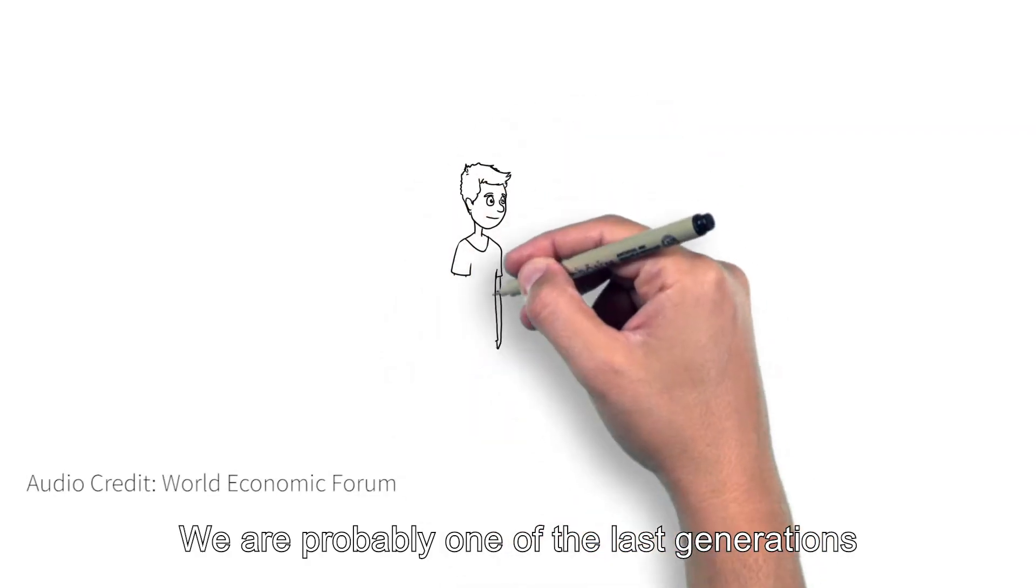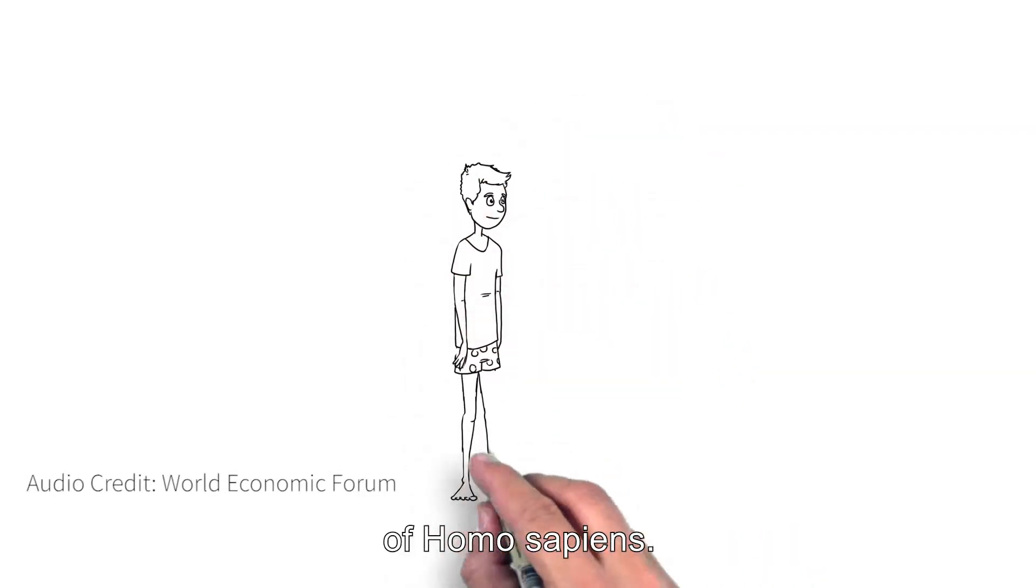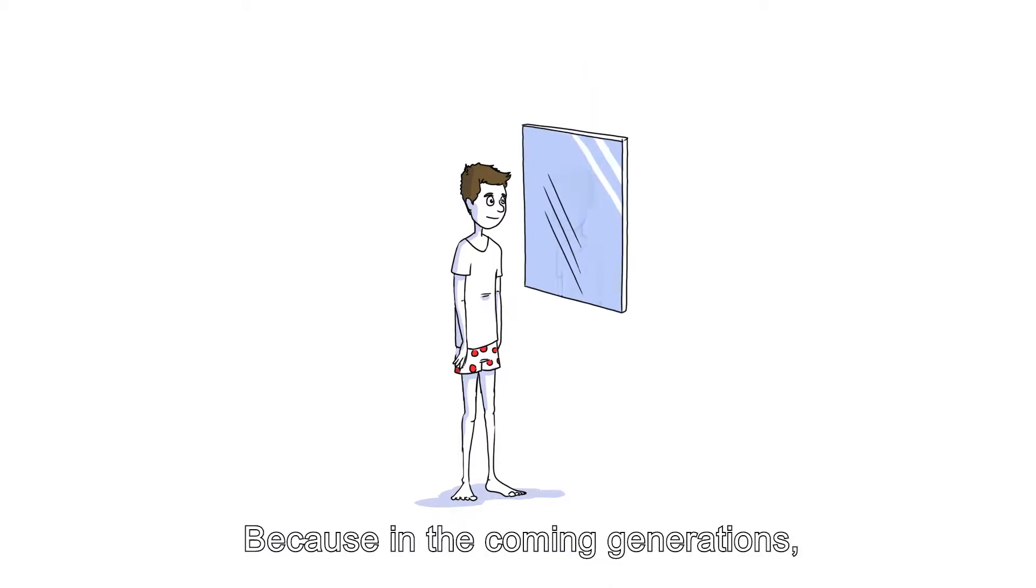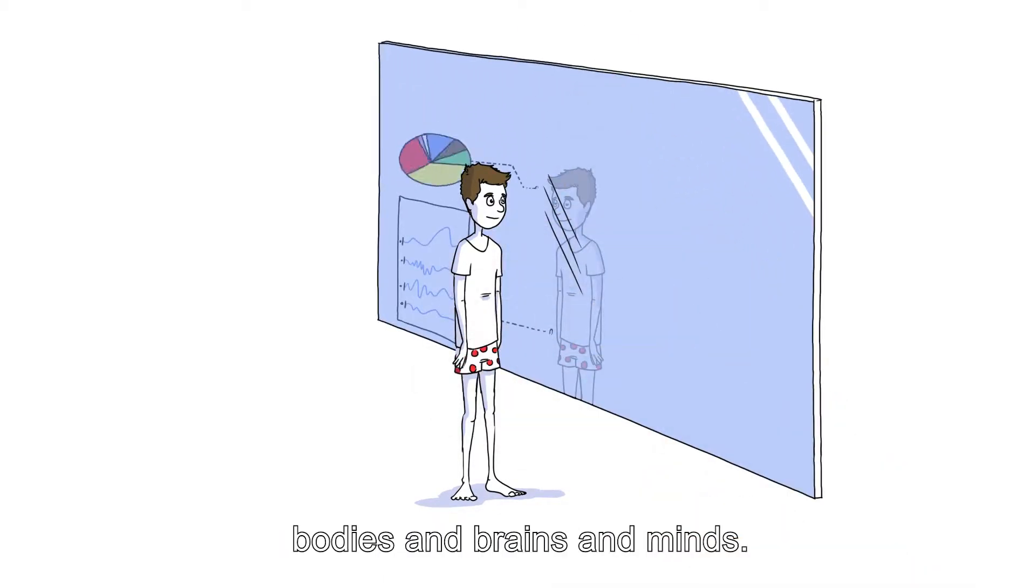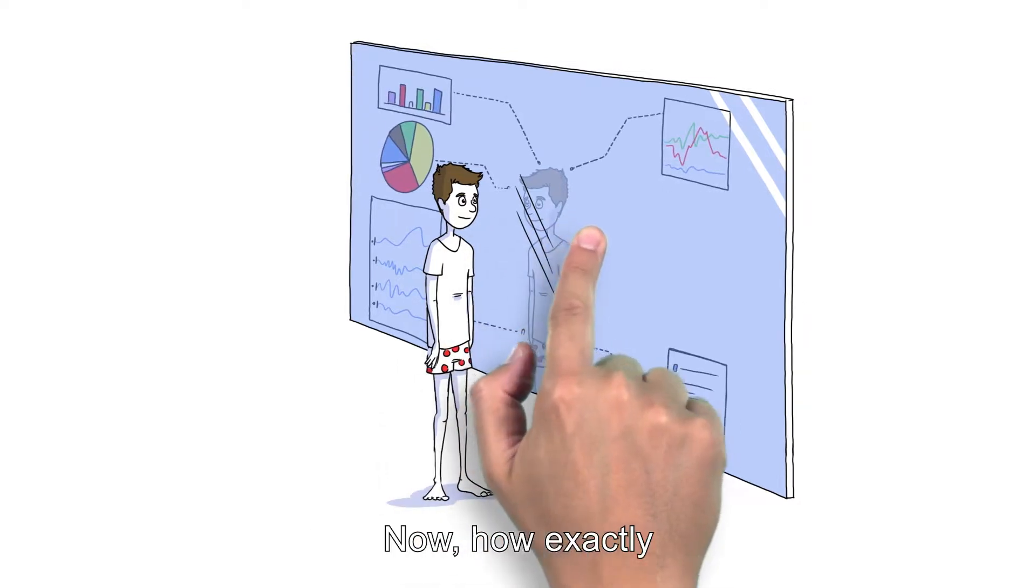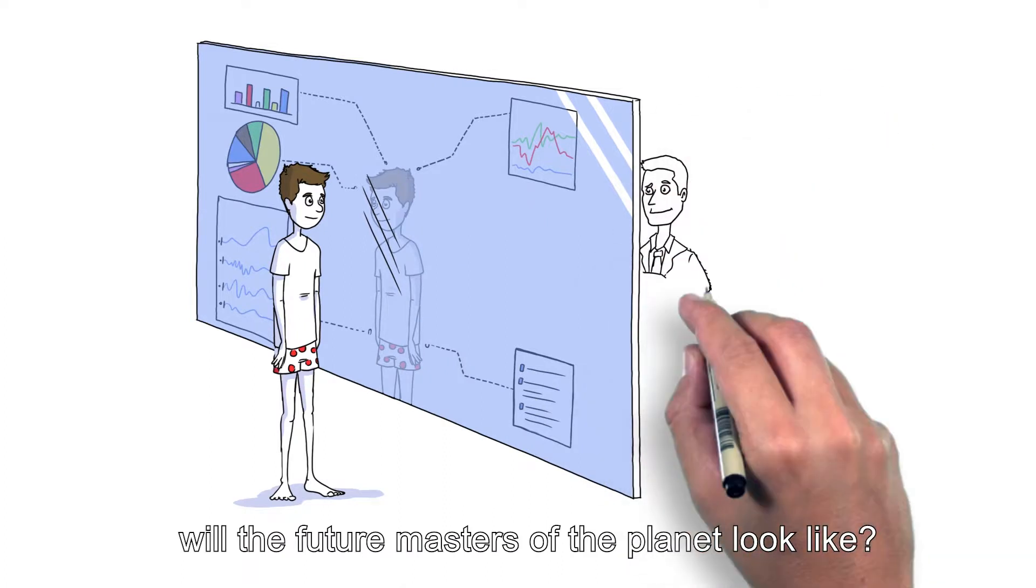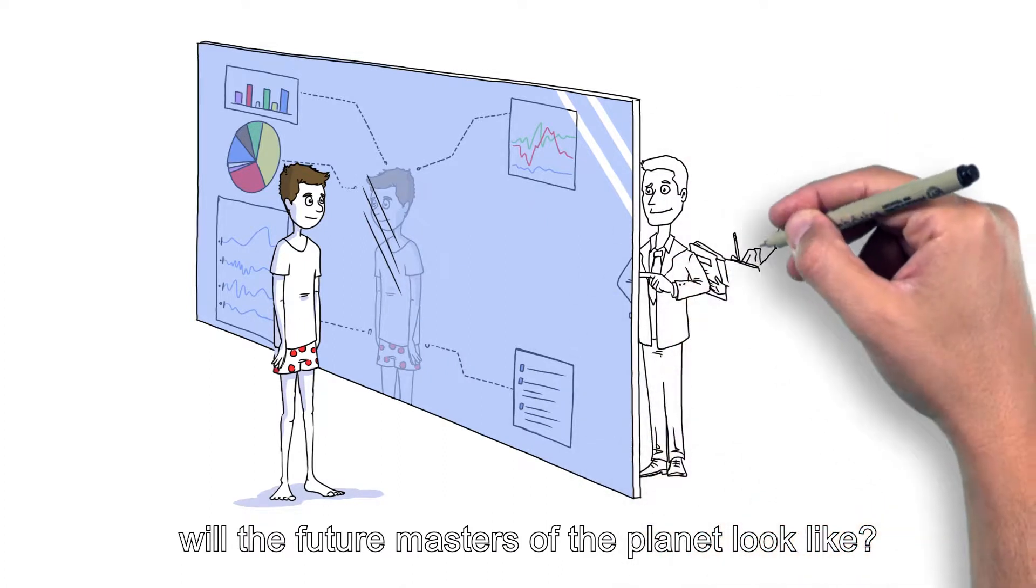We are probably one of the last generations of Homo sapiens, because in the coming generations, we will learn how to engineer bodies and brains and minds. How exactly will the future masters of the planet look like?